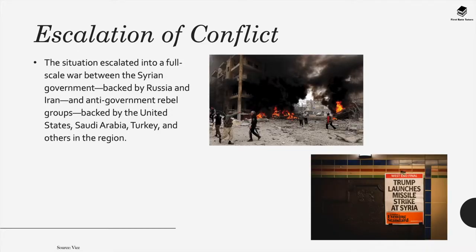The situation escalated into full-scale war between the Syrian government, which was backed by Russia, Iran, and anti-government rebel groups backed by the US, Saudi Arabia, Turkey and others in the region.